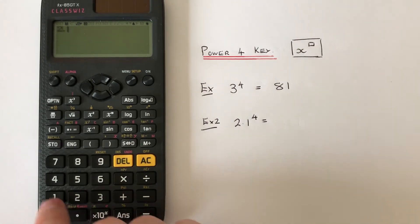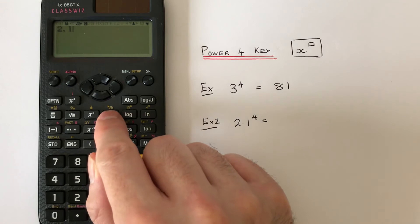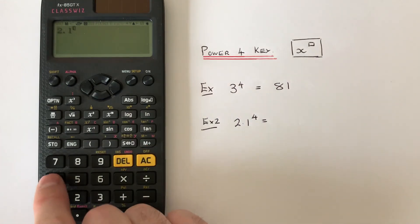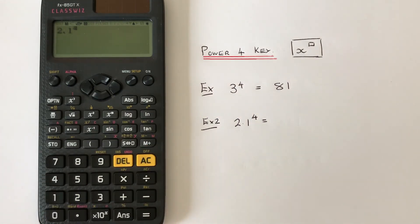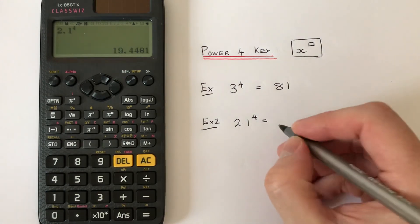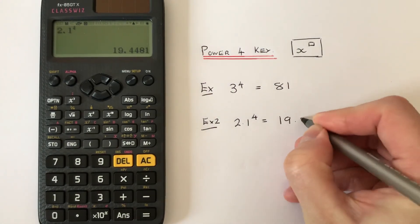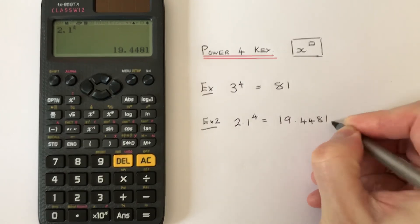Type in 2.1, then press the power key and type 4 into the little box. Press equals and we get the answer 19.4481.